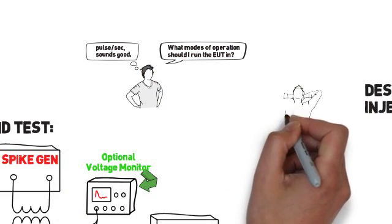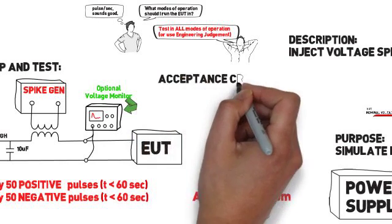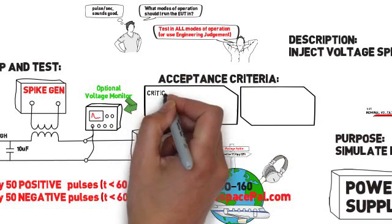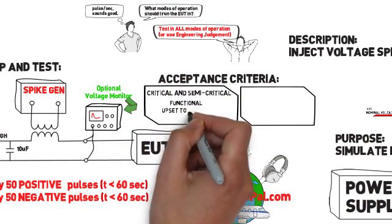The acceptance criteria for voltage spike is a little unclear, and that's because different products have different acceptance criteria for this test. Typically, if you're a critical or semi-critical system, this is an upset tolerance test and performance shall be maintained during the test.